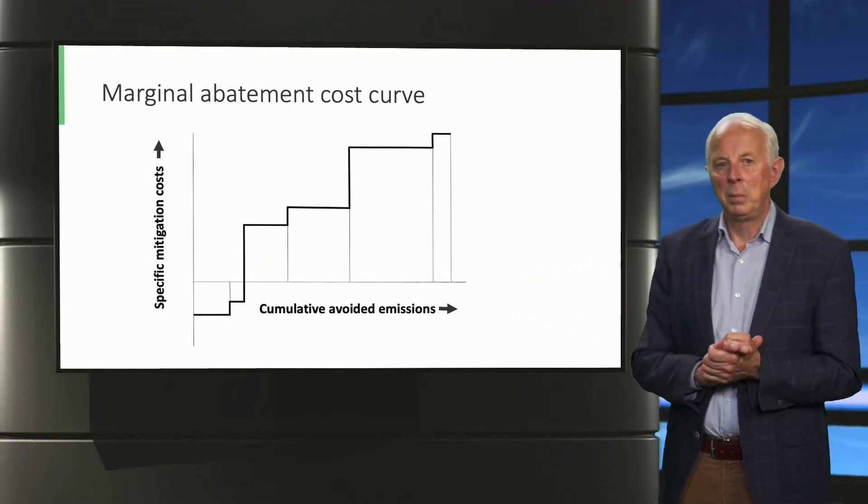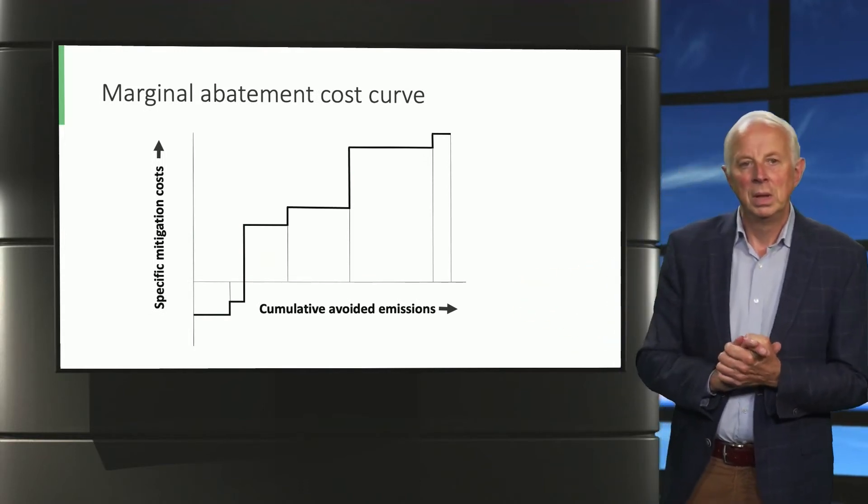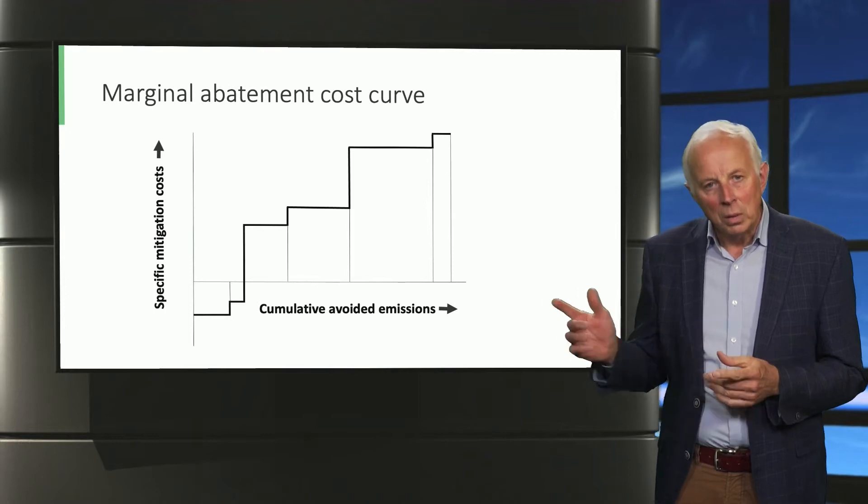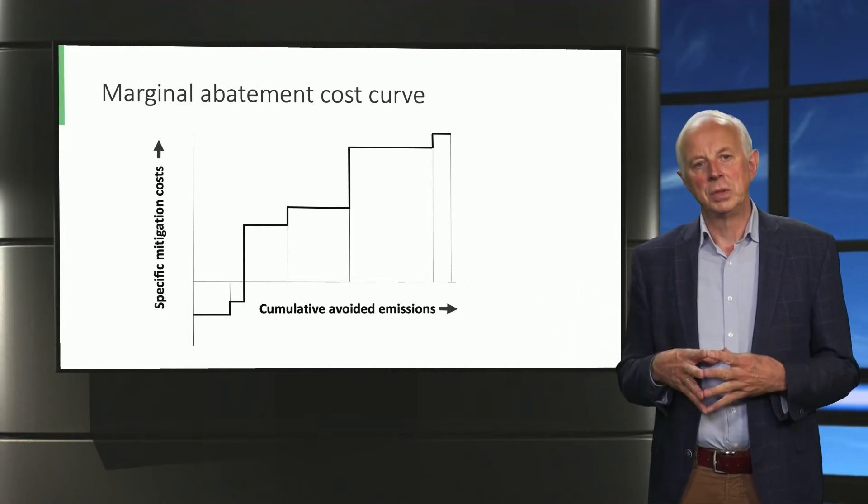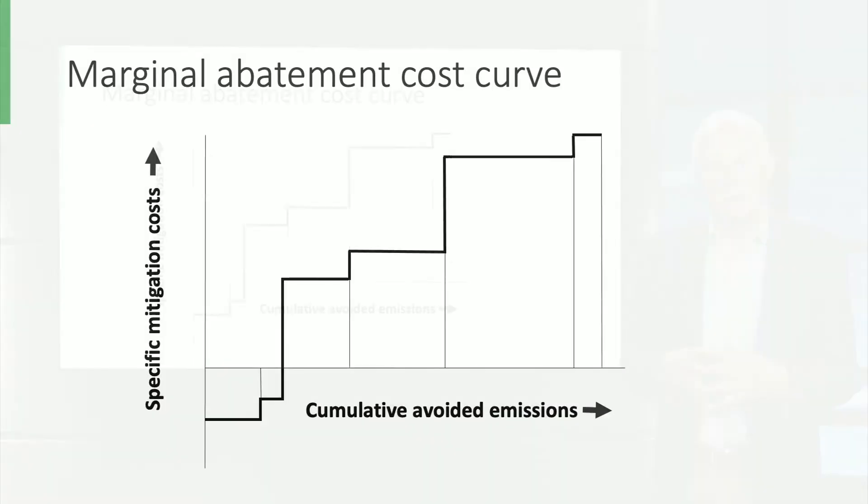Here again is an example of a marginal abatement cost curve where the emphasis is more on the outline than on the individual options. What you initially see in this graph is that the cost of options can be negative, so the curve can start below zero. This is no surprise as some options may have receivables that are larger than the costs.